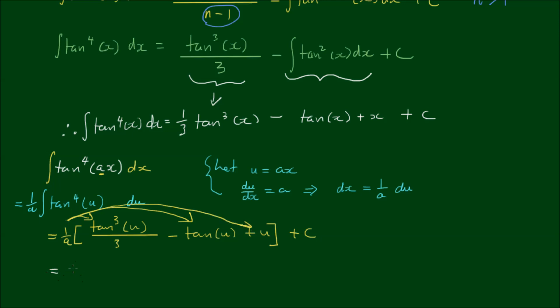So we have 1 on 3A by tan cubed u is equal to Ax. So we back substitute the original terms. Minus 1 on A by the tan of Ax plus 1 on A by Ax plus c. 1 on A by A cancels.